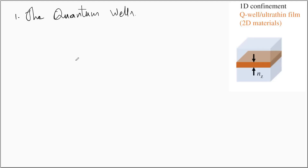A quantum well is a two-dimensional nanostructure in which there is confinement along one direction and the particle is free to move in the other two directions, that is in the xy plane. Since it is confined along one particular direction, the particle possesses discrete energies associated with the confinement dimension. We have a slab in the form of a cube with a small region confined along the z direction, with potential barriers above and below the confinement area, forming a one-dimensional potential well.